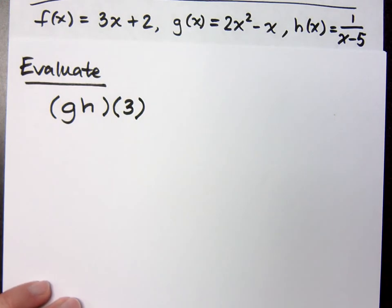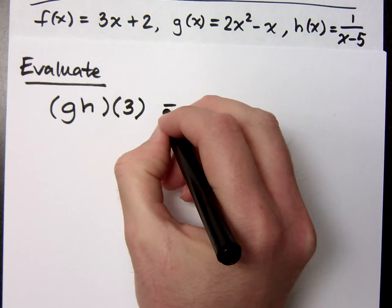Alright, in this problem I want to evaluate g times h of 3. So, tell me what that means. How can I rewrite this so it makes more sense to me?